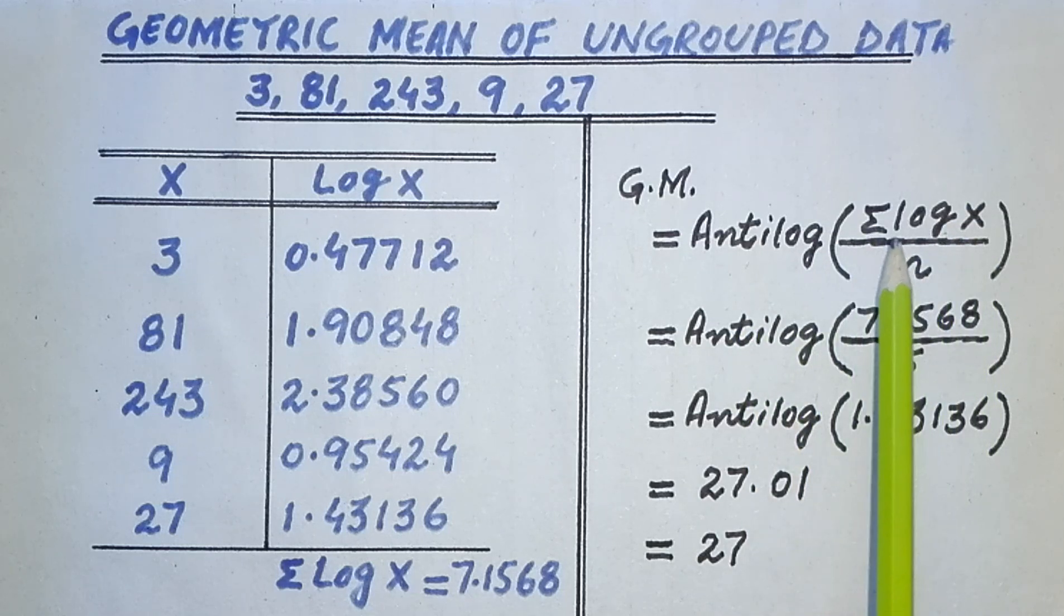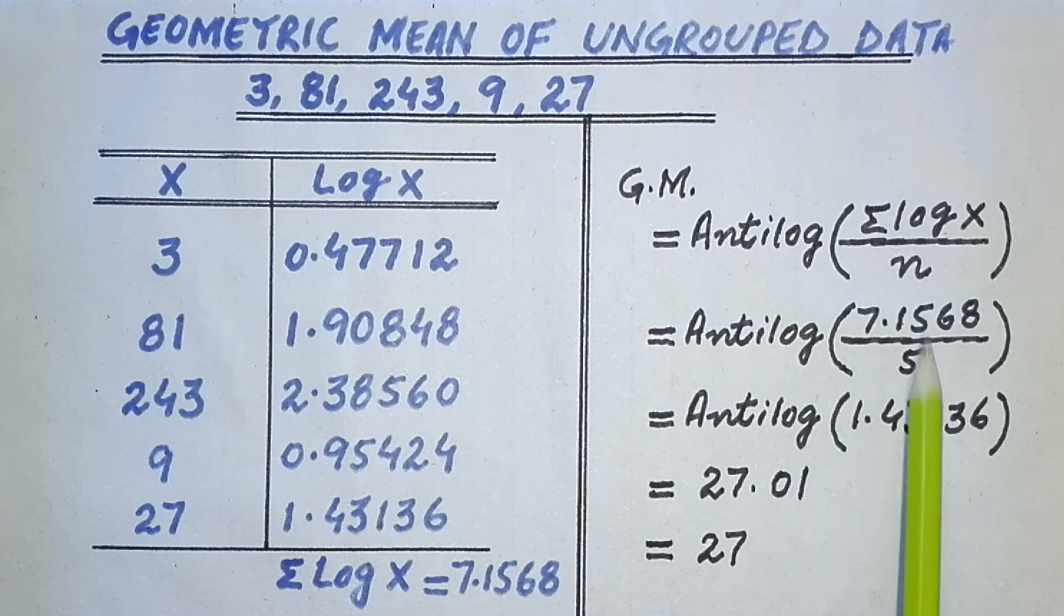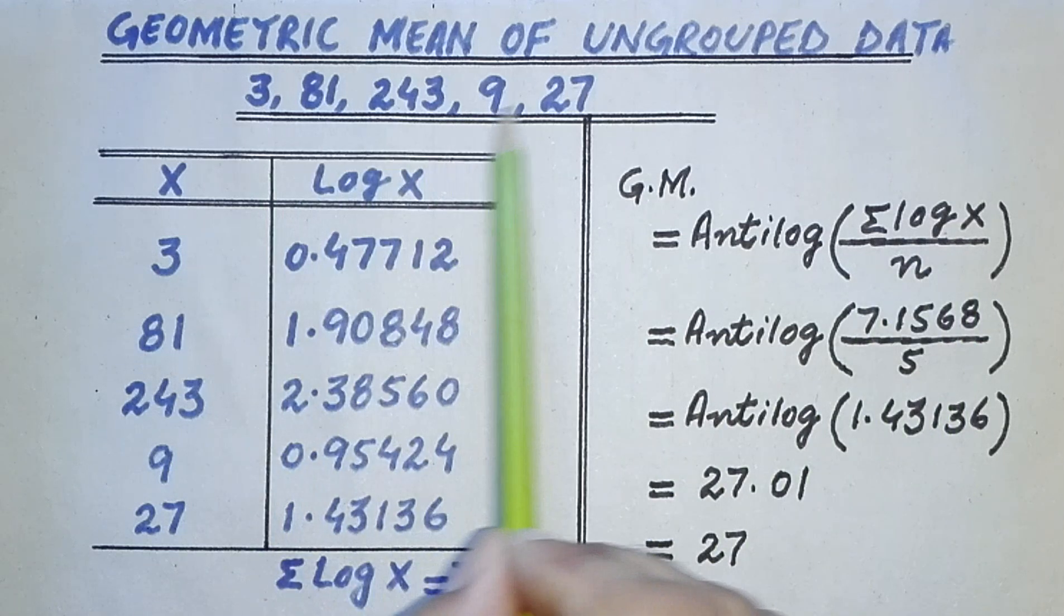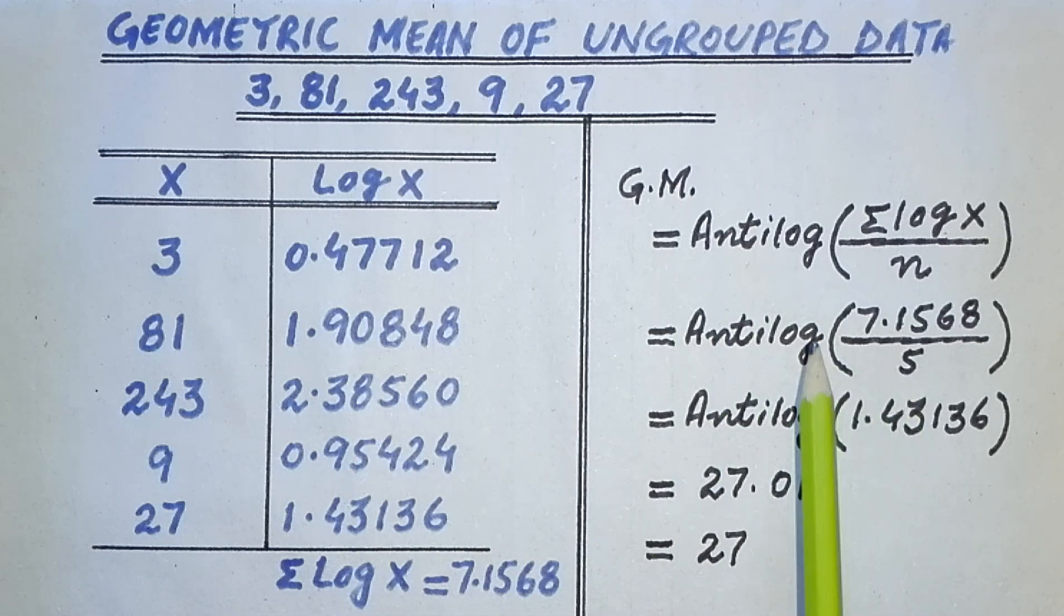In this formula, we put the value of sigma log x and n, which is the number of terms present in the given ungrouped data. First we do the division, then we take antilog with the help of a calculator, and at the end we find the geometric mean of the given ungrouped data.